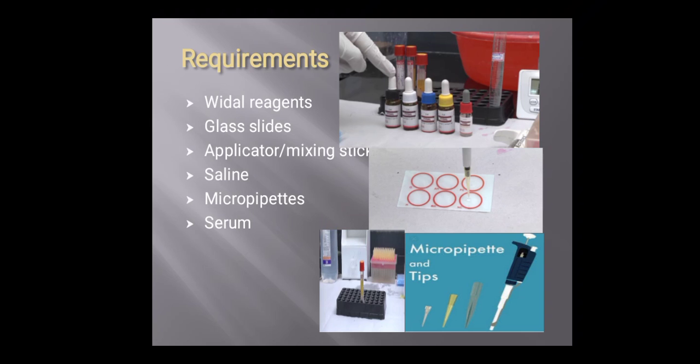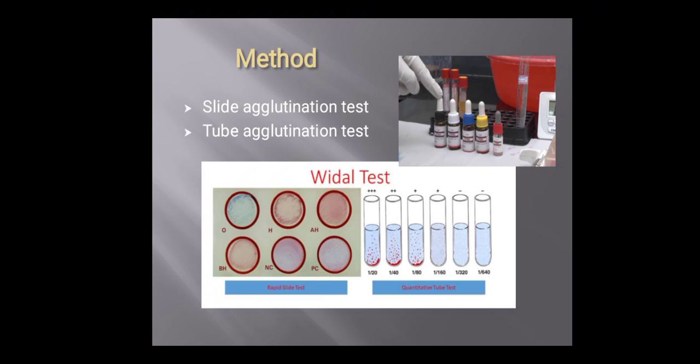Firstly, take a glass slide which comes in the kit that has six reaction circles as you can see in the given image. As I said earlier, I will be explaining only the slide method. To perform this slide method, first bring the reagent to room temperature before performing the test so that it equilibrates with the room temperature, and then shake and mix the antigen well before dispensing.